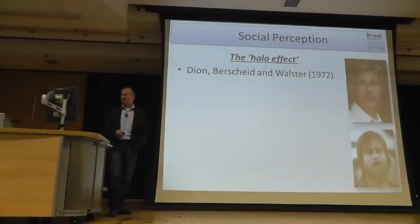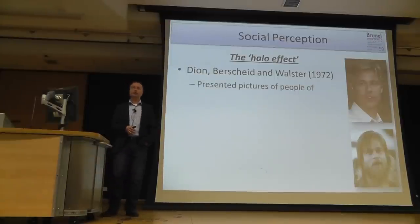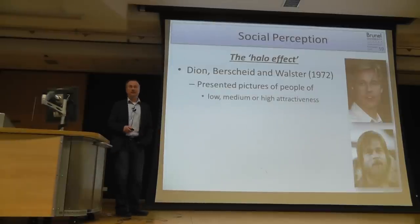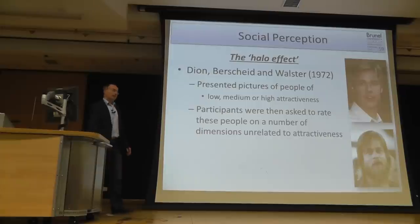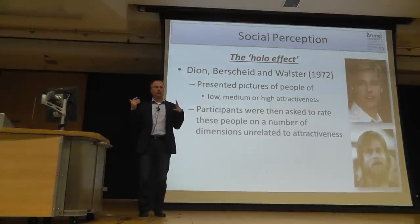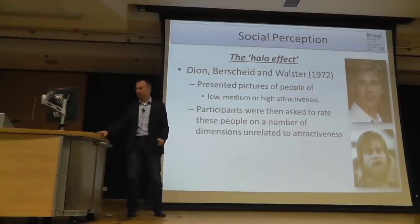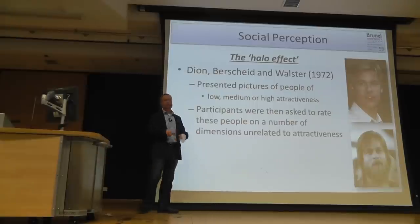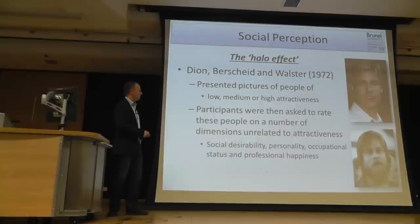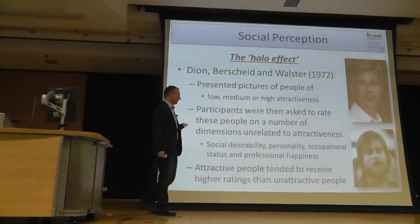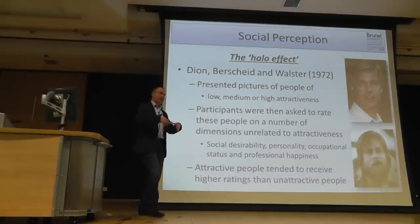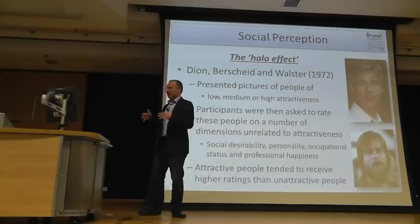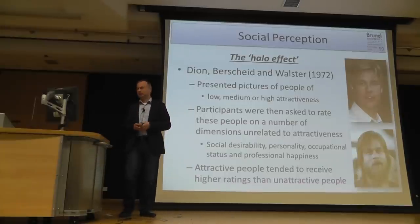A study done by Dion and colleagues presented pictures of people previously rated for physical attractiveness — low, medium, or high. Participants who just saw these pictures were asked to judge and rate these people on dimensions such as social desirability, personality, professional happiness, and status. What they found is that attractive people tend to receive higher ratings than unattractive people — the halo effect creates a consistent image fitting certain stereotypes.